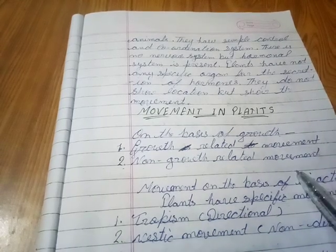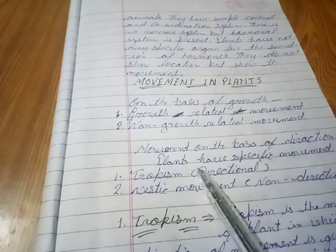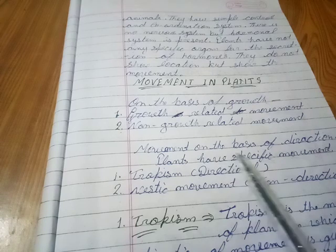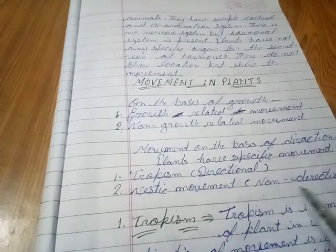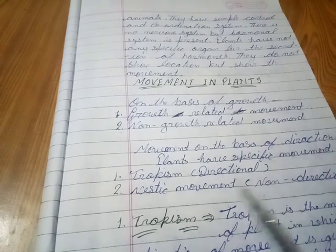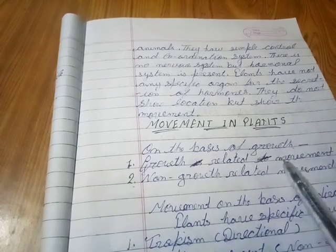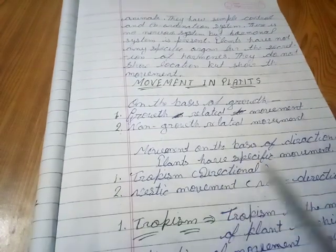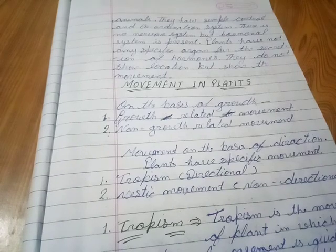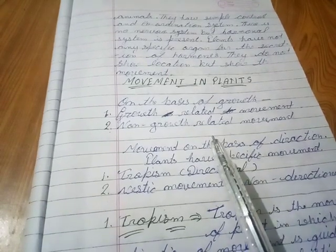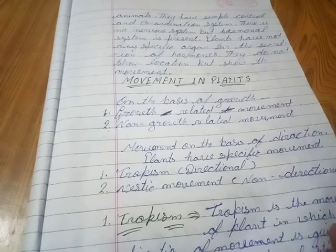On the basis of direction, plant movements are of two types: directional movement and non-directional movement. So in summary, plant movements are classified on the basis of growth — into growth-related and non-growth-related — and on the basis of direction — into directional and non-directional. I will teach you about tropic and nastic movements in our next video.